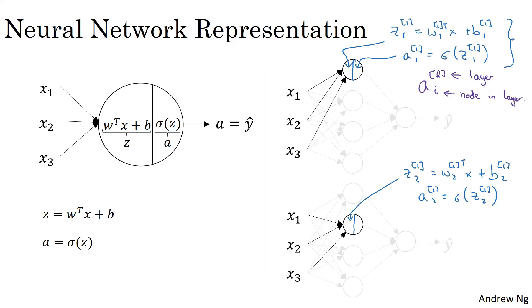And again, feel free to pause the video if you want, but you can double check that the superscript and subscript notation is consistent with what we had written here above in purple. So we've talked through the first two hidden units in the neural network, hidden units three and four also represent similar computations.